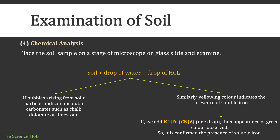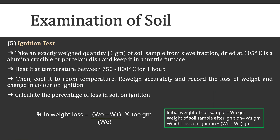Then chemical analysis: place the soil sample on a glass slide on the stage of a microscope and examine it. Add a drop of water and a drop of HCl to the soil. Two results: if bubbles arise from the soil particles, it indicates insoluble carbonates such as chalk, dolomite, or limestone. Yellow color indicates the presence of soluble iron ions. If K4Fe(CN)6 is added, the appearance of green color confirms the presence of soluble ions.